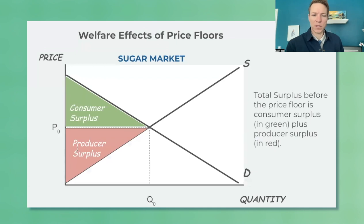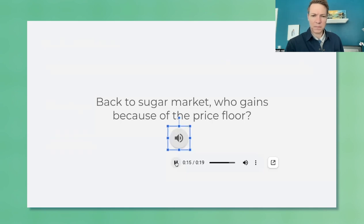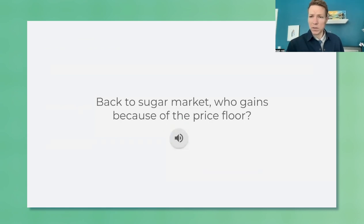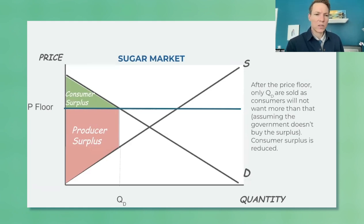Now we graph the welfare effects — consumer surplus and producer surplus. When the price floor comes in, ask who gains. A podcast clip introduces Blaine Benedict, a sugar beet farmer in Sabin, Minnesota — the farmers, the producers, are the ones who benefit from the price control. Consumer surplus goes way down to a smaller triangle, while producer surplus can go up if the amount gained exceeds the amount lost.